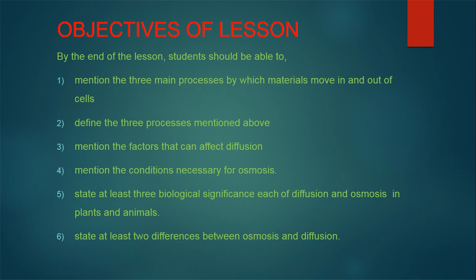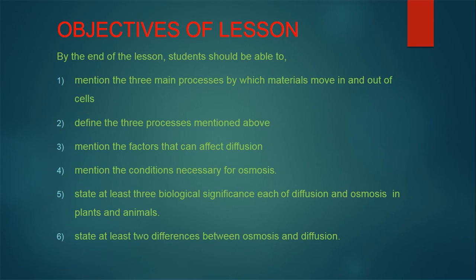Objectives of the lesson. By the end of the lesson, students should be able to: one, mention the three main processes by which materials move in and out of cells; two, define the three processes mentioned; three, mention the factors that can affect diffusion; four, mention the conditions necessary for osmosis; five, state at least three biological significance each of diffusion and osmosis in plants and animals; six, state at least two differences between osmosis and diffusion.